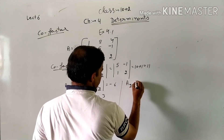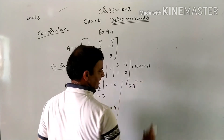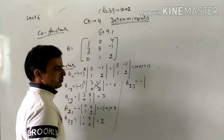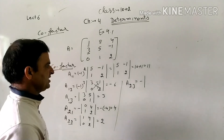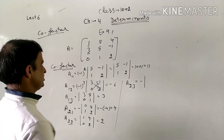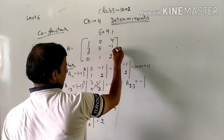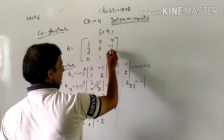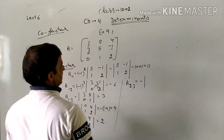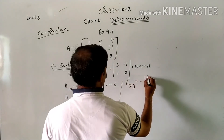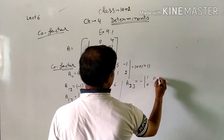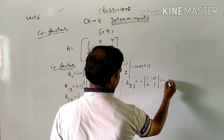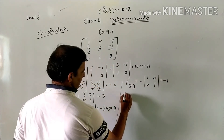A23: minus sign applies since 2+3=5 is odd. The element at position 2,3 is 1. Deleting its row and column leaves [1, 0; 0, 1] — wait, row 2 and column 3 deleted leaves [1, 3; 4, -1]. Minus × (1×(-1) - 3×4) = minus × (-13) = plus 13... The product gives minus one, so A23 = -1.